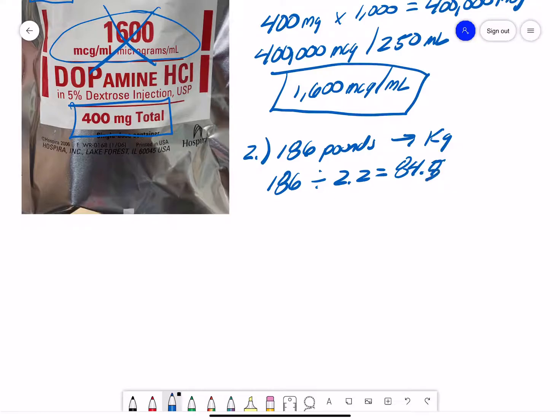And we would find that that comes out to be 84.5. And we would round that up to 85 kilograms. Now, to divide by 2.2 is not necessarily the easiest thing to do in the back of a medic unit.